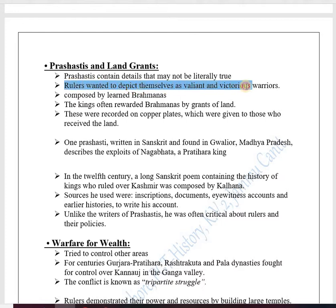Rulers wanted to depict themselves as violent and victorious warriors in these Prashastis. These Prashastis were composed by learned Brahmanas, and kings often rewarded them with grants of land. In return for composing Prashastis glorifying the king, the Brahmanas received gifts — particularly land grants.